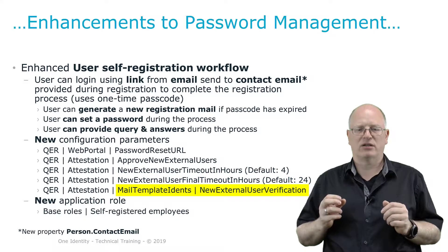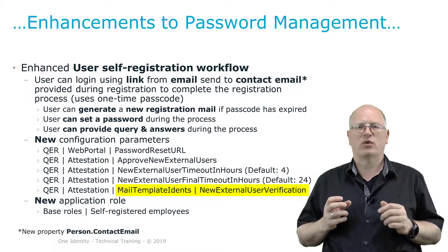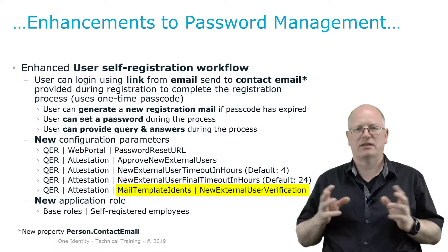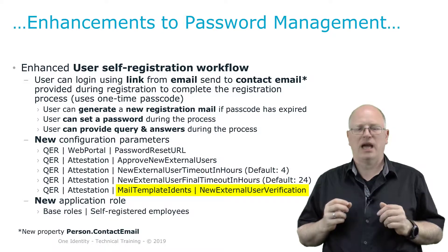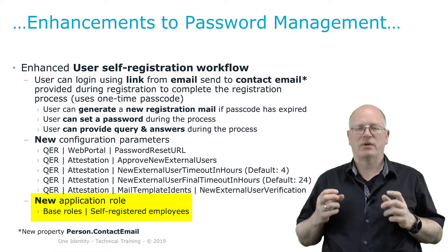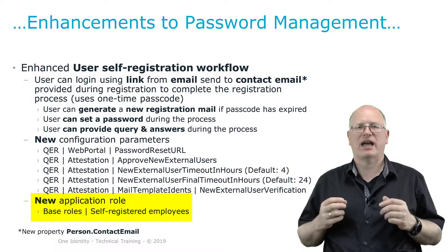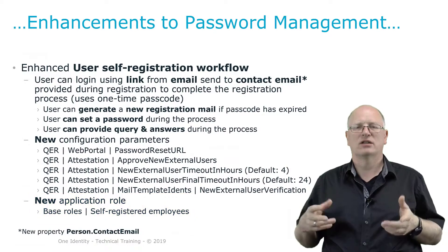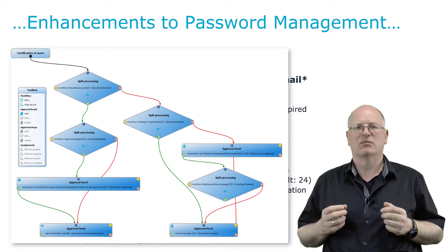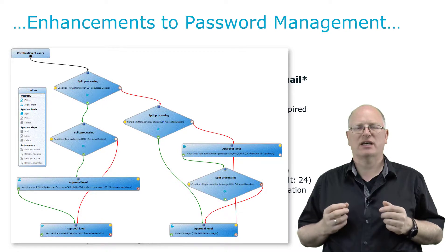The last configuration parameter is 'Mail Templates | New external user verification'. This is where I store the name of the mail template that gets sent out. To get the permissions for this specific workflow, I need to become a member of the base role 'Self-Registration Employees' application role of the identity manager. This is a process that happens automatically — nothing needs to be manually configured. This is an additional process to the already existing registration process for internal users.